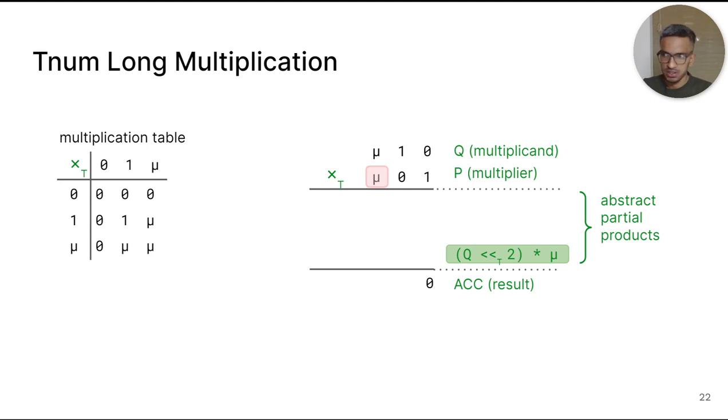Note that the shift here happens using the abstract version of the usual shift operator. Also note that there are only 3 possible cases for the LSB of P. It could be either 0, 1 or mu. Let's first see the case where the LSB of P is a certain 1. In this case, 1 times any TNUM is the same TNUM, so the result produced is just Q. It is added to the accumulator as it is. Recall again that ACK is accumulating partial products using the abstract addition operator which soundly takes care of carries. We see the first partial product mu 0 1.